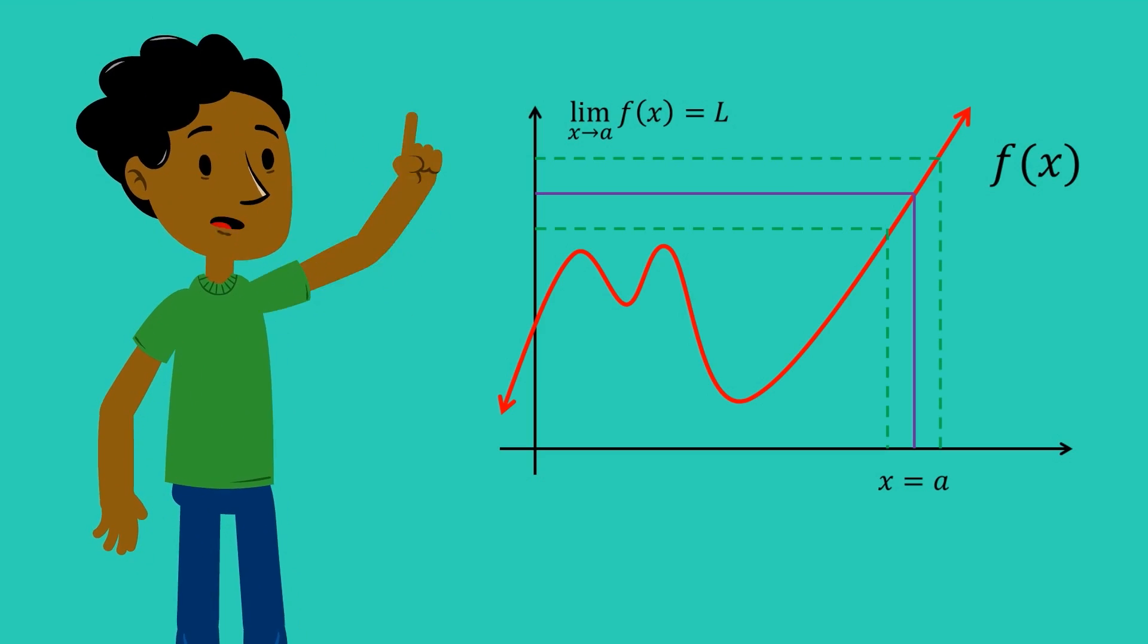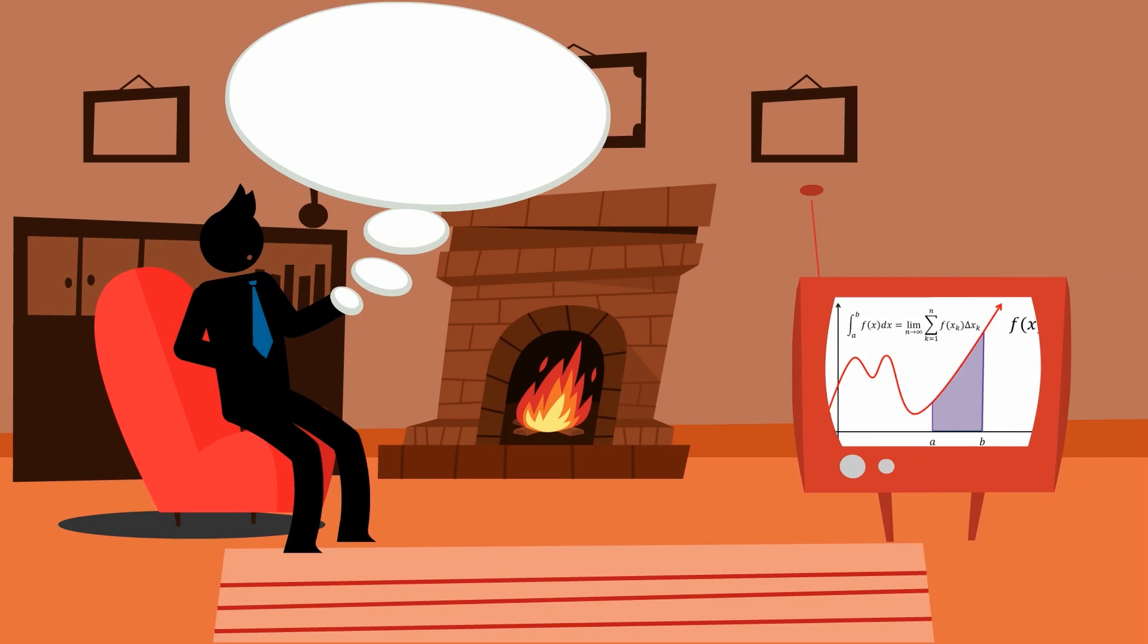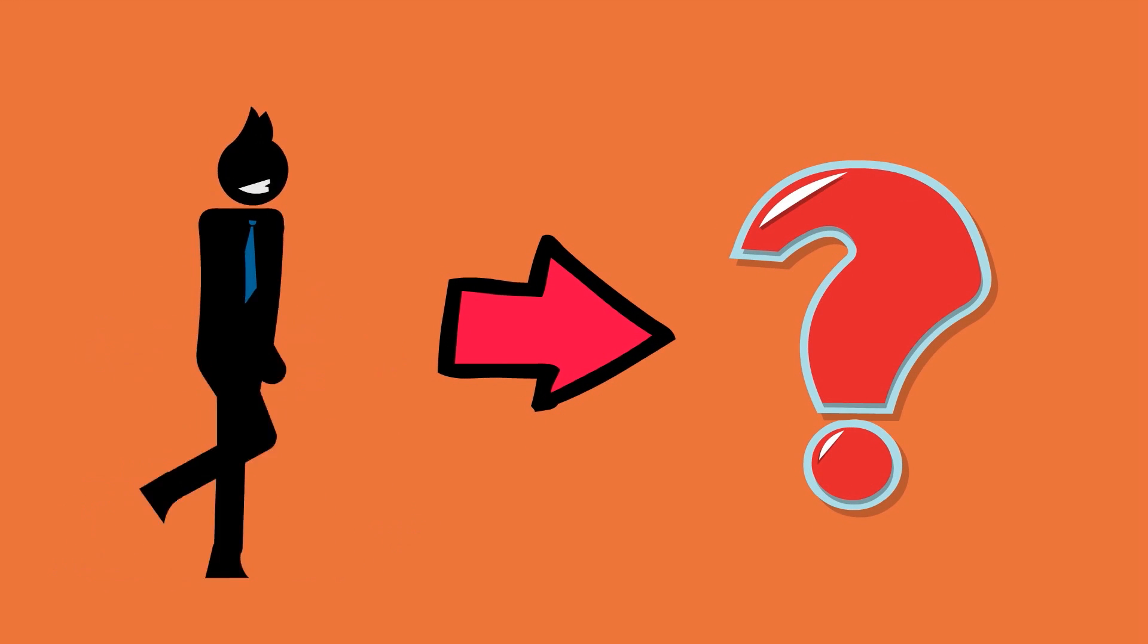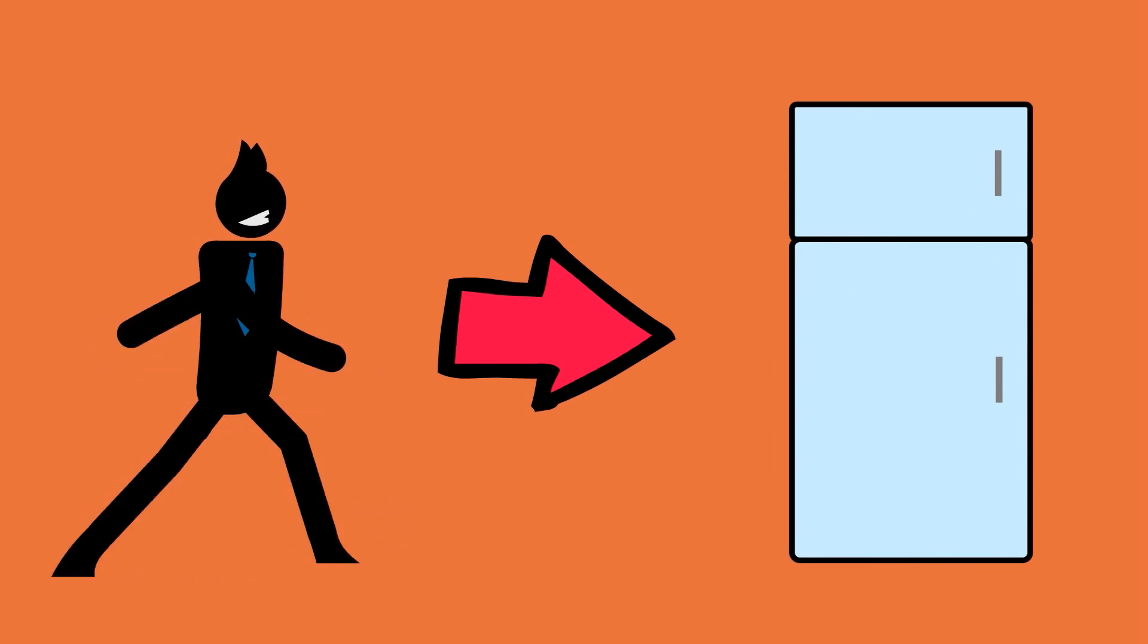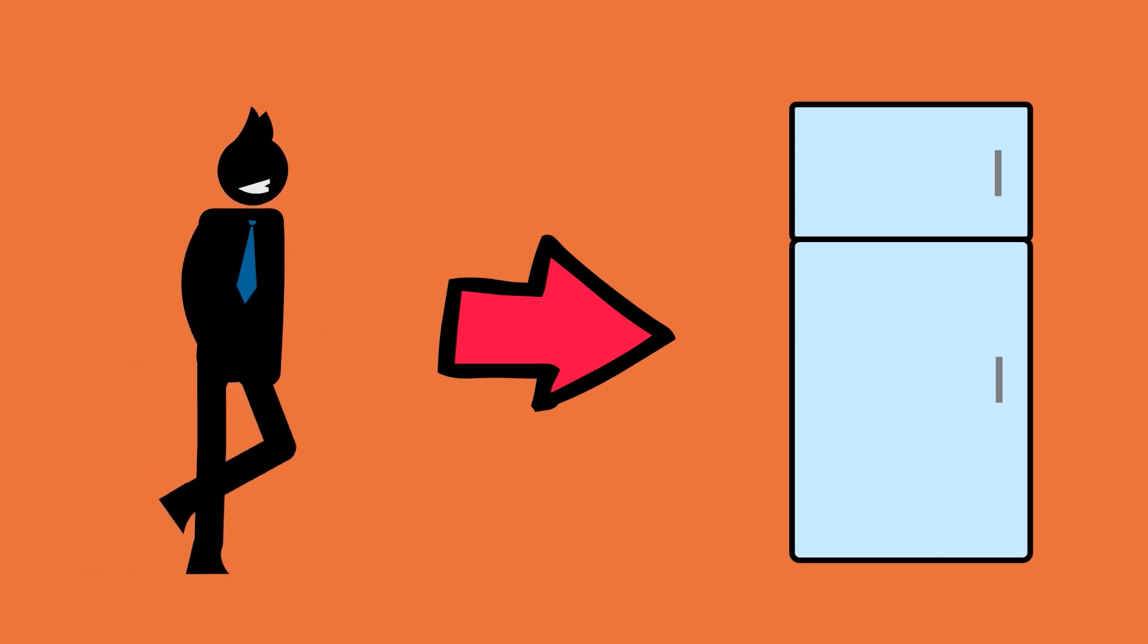Let's explain limits using an analogy. Suppose you are watching TV and start getting a massive craving for pizza. Fortunately, you just happen to have some leftover pizza in the kitchen. So you get up from the couch and start heading towards the fridge. In this instance, if someone were to describe where you are going, they would say you are approaching the fridge. They would be confident in their description because as you keep walking, you are getting closer and closer to where the fridge is located.